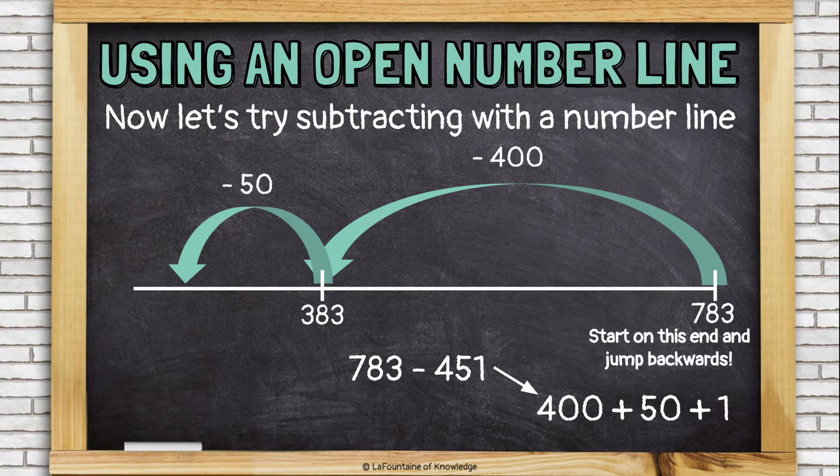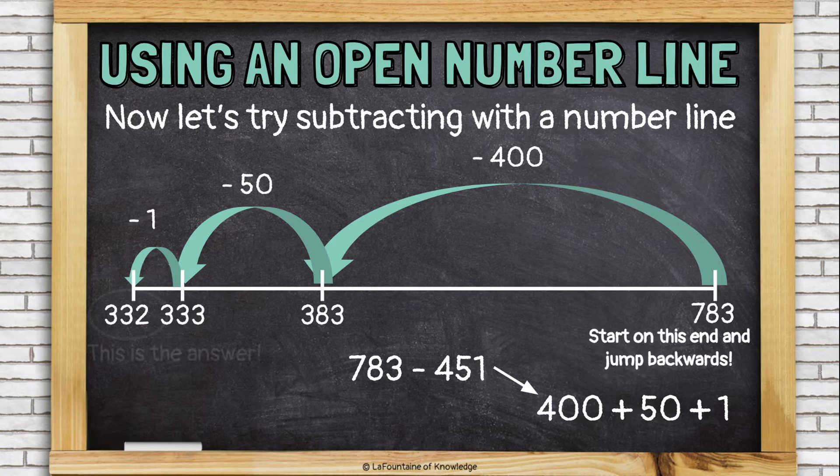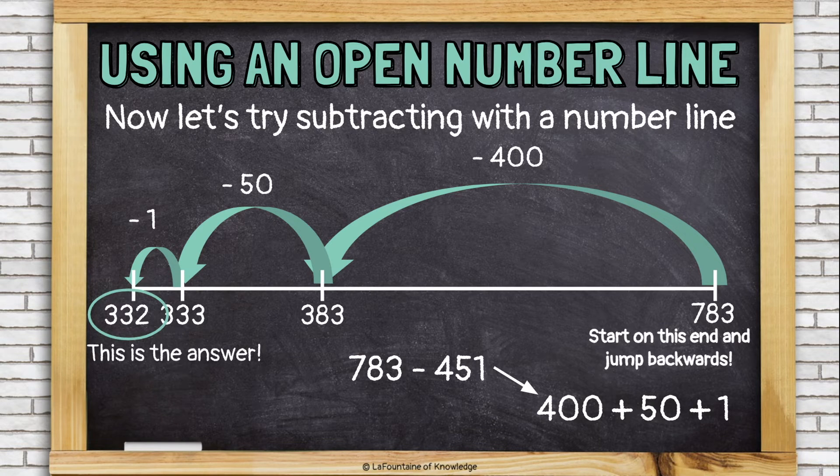Next, I need to subtract 50. 383 minus 50 is 333. And then I just need to take away one more, leaving me with 332, which is the answer to this subtraction problem.